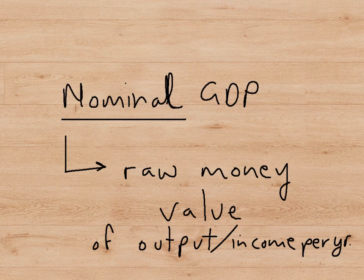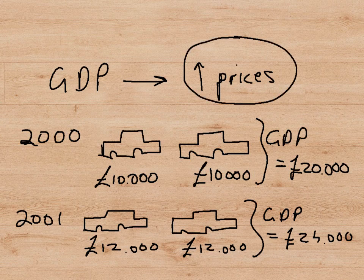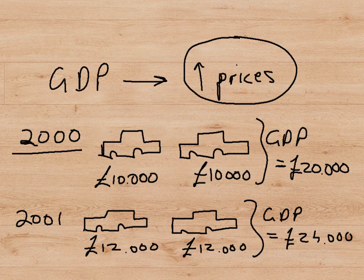What do we mean by raw money value and why does that matter? We have to understand that, unfortunately, GDP is affected by an increase in prices, and this can make it look as though the economy has in fact grown when really it hasn't. Let's look at this example by imagining an economy which in the year 2000 produced only two cars — that was all the production that happened. The prices of these two cars were identical at 10,000 pounds each, so the value of output in this economy in the year 2000 was 20,000 pounds.